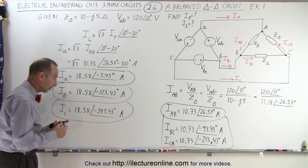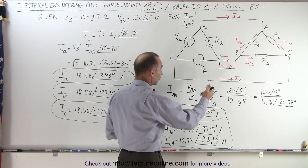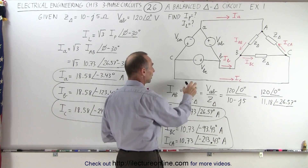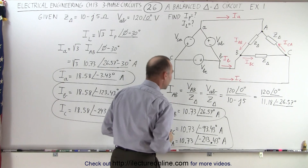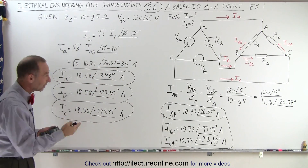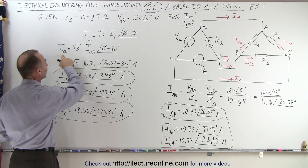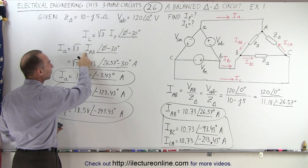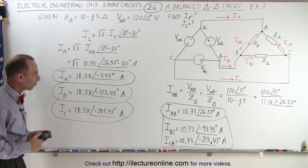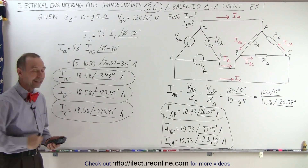So you can see that with a delta-delta circuit, there's no difference between the line and the phase voltages, so the phase current is simply the line voltage divided by the impedance. For the line currents, we find them the same way as for a Y-delta circuit: the line current is the square root of three times the magnitude of the phase current, and we subtract 30 degrees for the phase lag. That is how we find the currents in a delta-delta circuit.